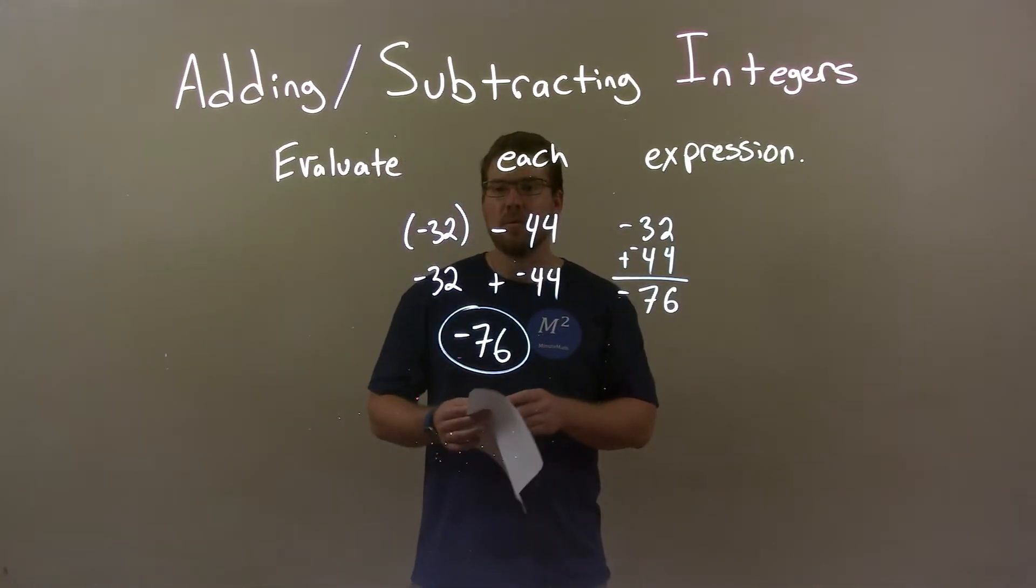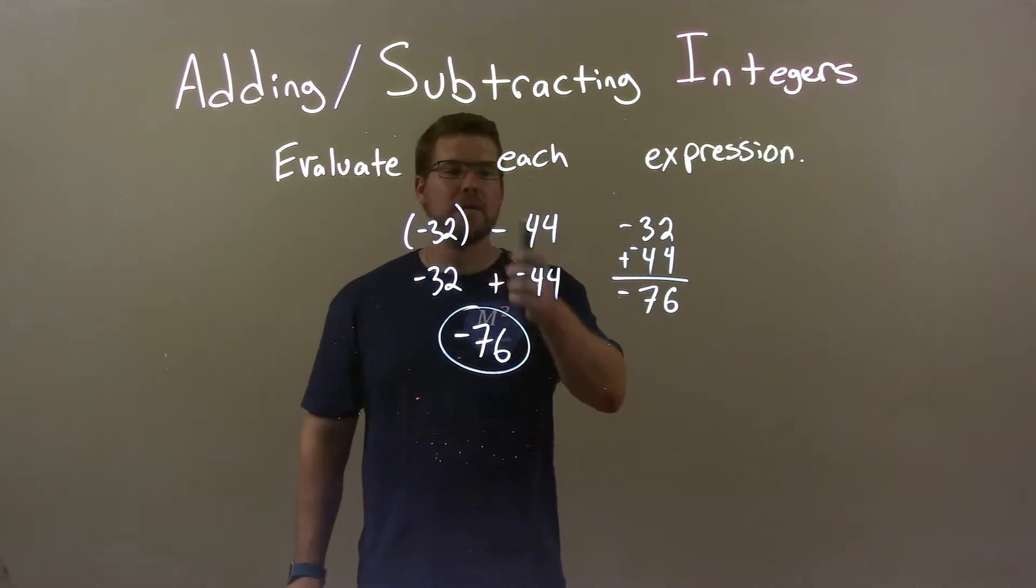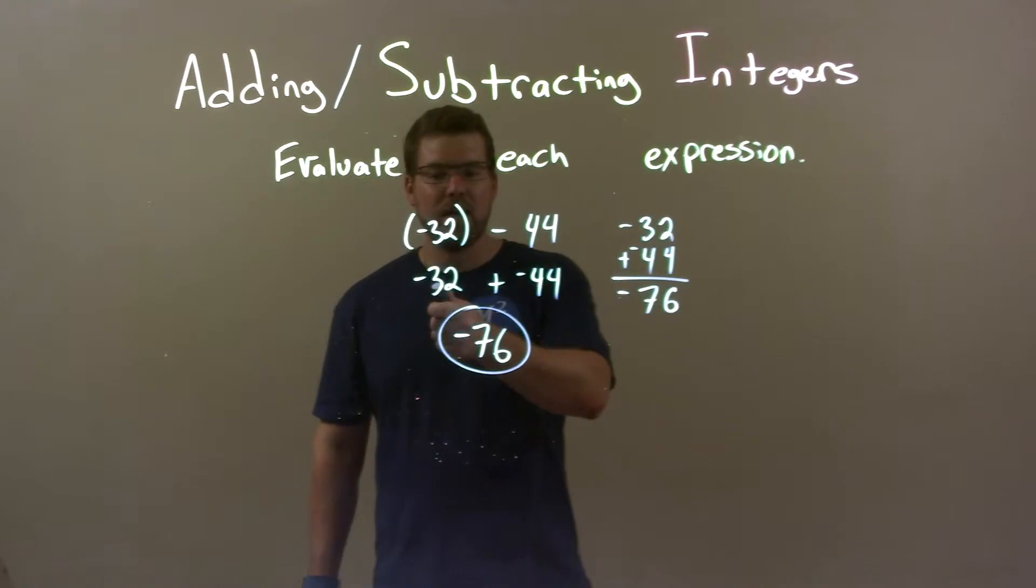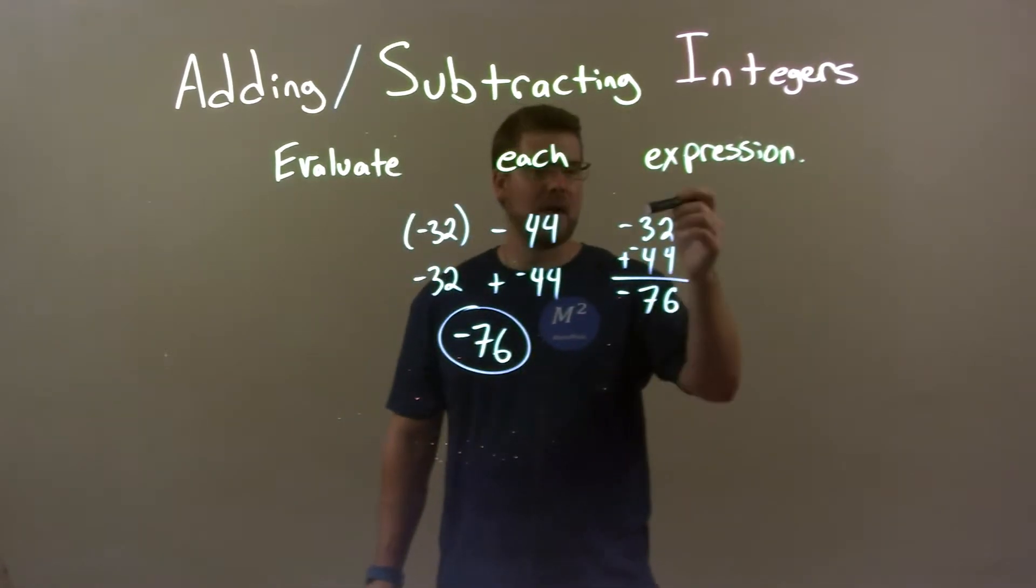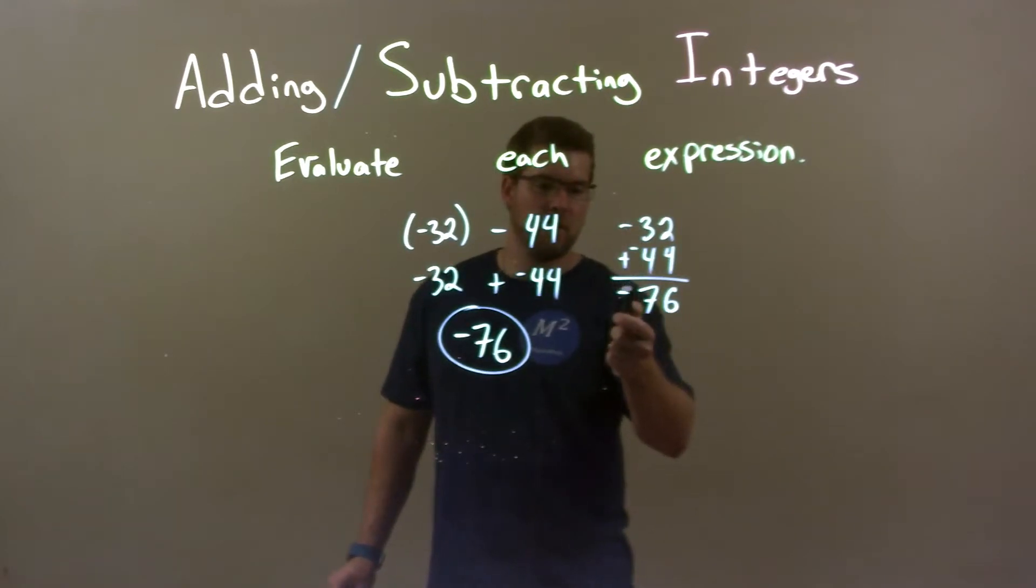So quick recap: we have negative 32 minus 44. I know subtracting 44 is the same thing as adding negative 44. So we have negative 32 plus negative 44. I just add 32 and 44, which gives me 76. Keep the negative sign because they're both negative. Our final answer is negative 76.